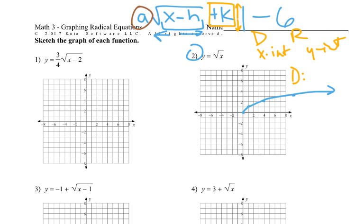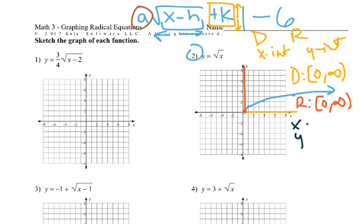So our domain: we start at 0 and go to positive infinity, starting here, domain goes to positive infinity. For our range, we start at 0 and it just keeps going up, so again 0 to positive infinity. And the x and y-intercepts are the same — they're both at the origin, (0,0).